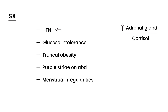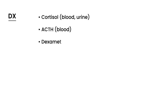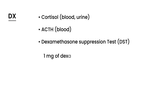To diagnose Cushing's, you first measure blood cortisol levels and urine cortisol levels. You also measure ACTH levels in the blood, but this doesn't give you a very specific answer. So you need a specific test to figure out what's going on, and that test is known as the dexamethasone suppression test, abbreviated DST.